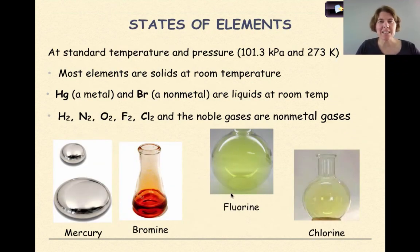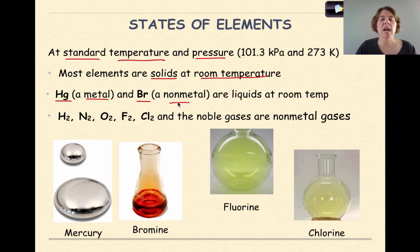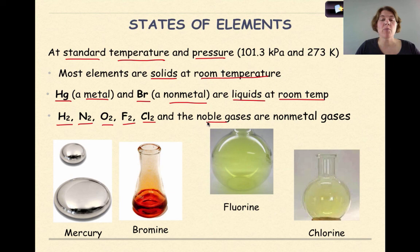Finally, let's talk about states of elements at STP — standard temperature and pressure. Most elements are solids at room temperature, with the exception of mercury, which is a metal, and bromine, which is a non-metal — both are liquids at room temperature. Hydrogen, nitrogen, oxygen, fluorine, chlorine, and the noble gases are all non-metal gases at STP.